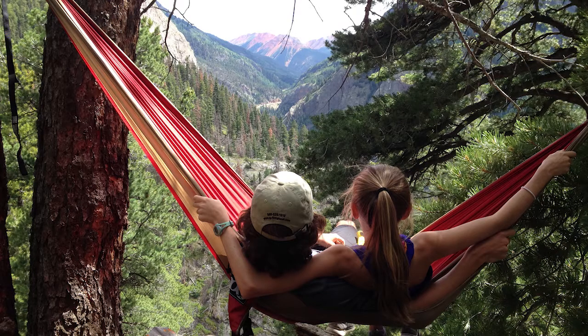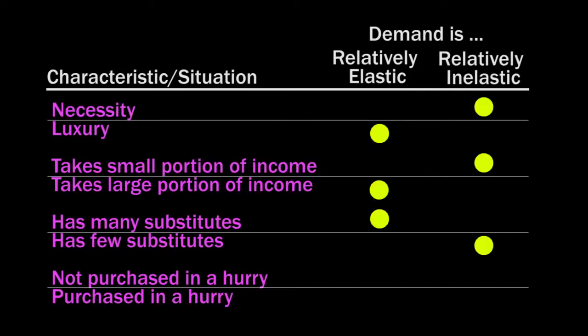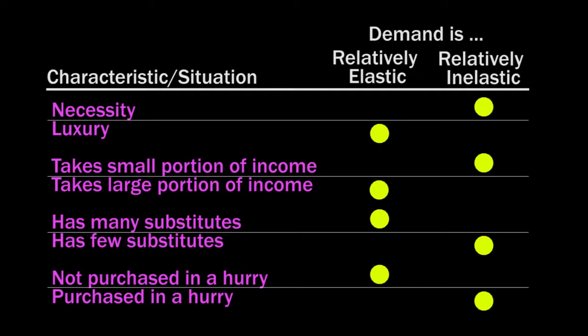Goods that you have plenty of time to buy, such as a hammock before your vacation in three months, have relatively elastic demand. Goods that must be purchased in a hurry, like a last-minute flight to your vacation destination, have relatively inelastic demand.